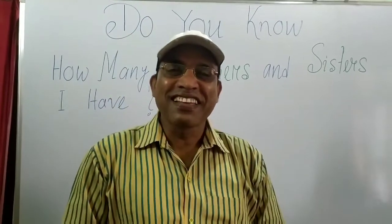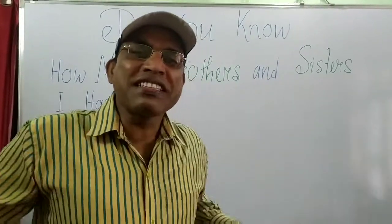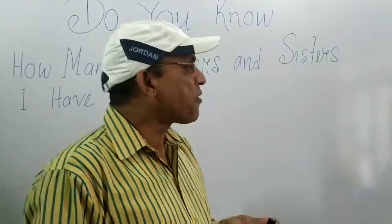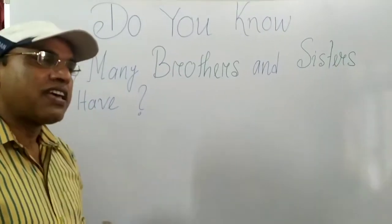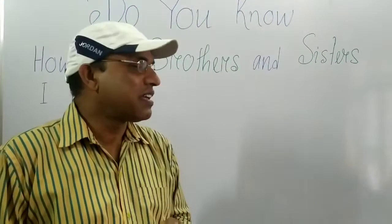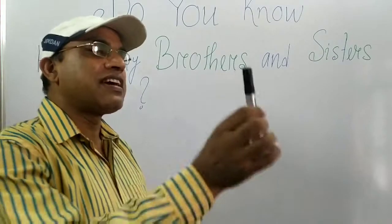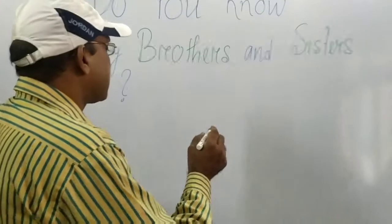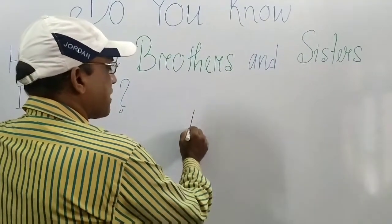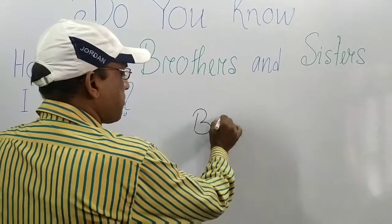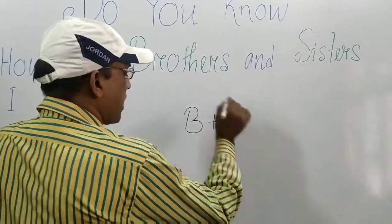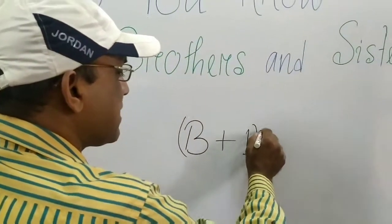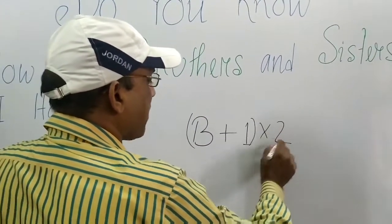Now what is the technique? This is very easy and you can easily find this result. The formula — you have to remember this formula, and in this formula there is a magic. You can't reveal the magic. So the formula is: first write brother, then brother plus 1, multiplying by 2 — we get a result.